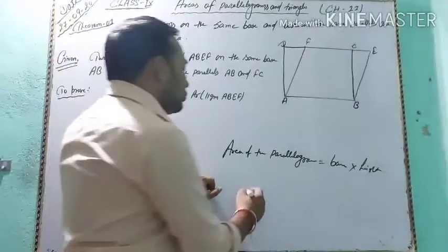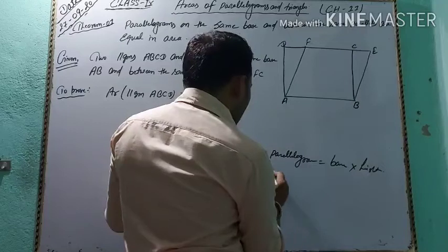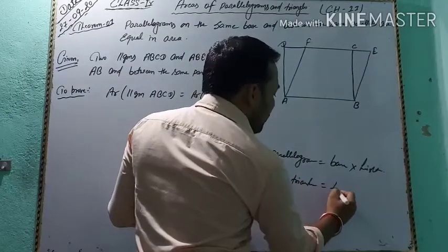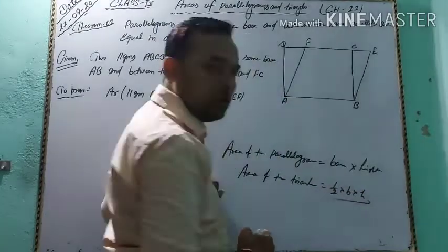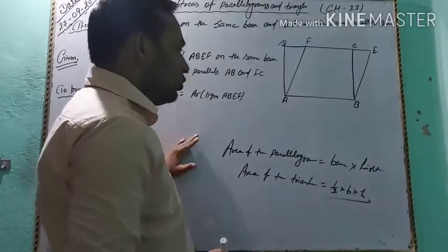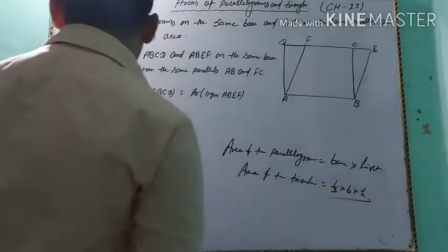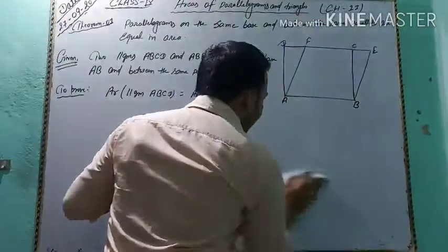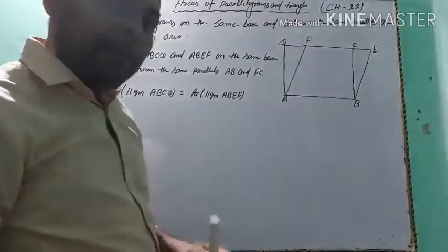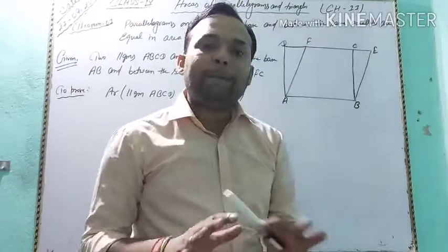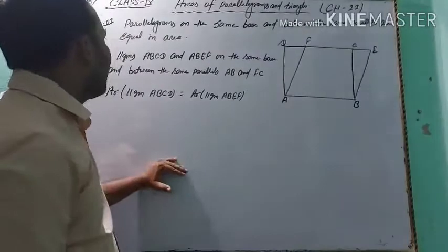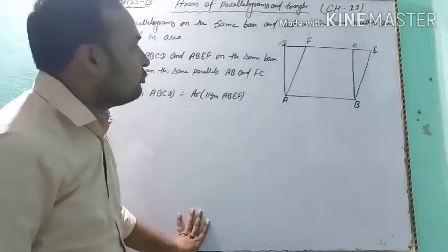And the area of the triangle is equal to one-half multiplied by base multiplied by height. So my first theorem is: parallelograms on the same base and between the same parallels are equal in area.